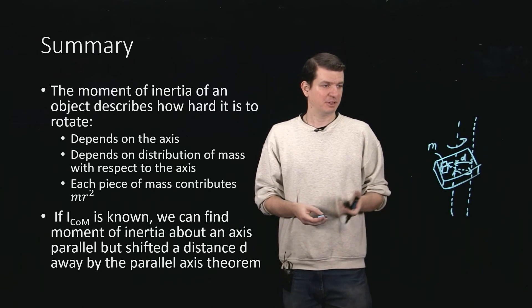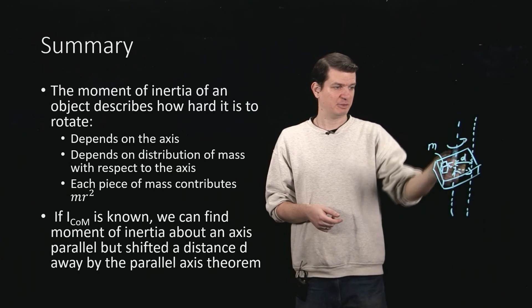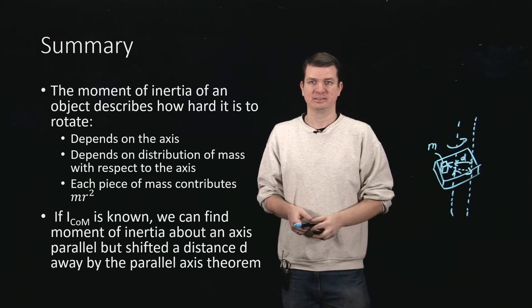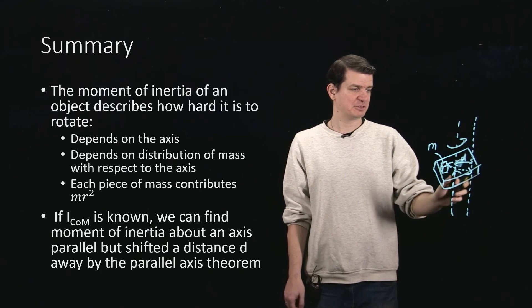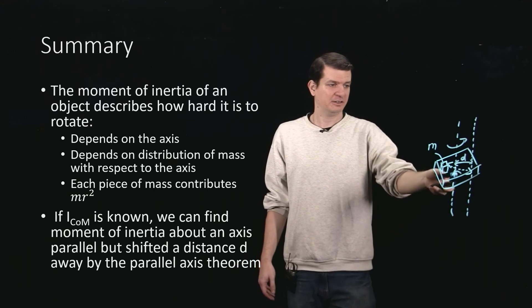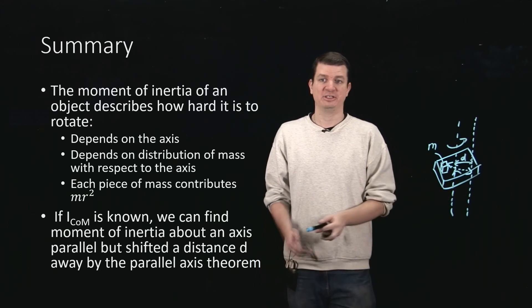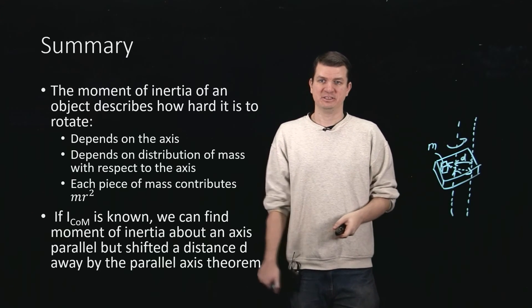But if we were already in possession of the moment of inertia of this block about the center of mass axis, then we can just talk about this new axis in terms of this shift by distance d, and take I about the center of mass, plus m, the mass of the whole thing, not just of the little block, times d squared.